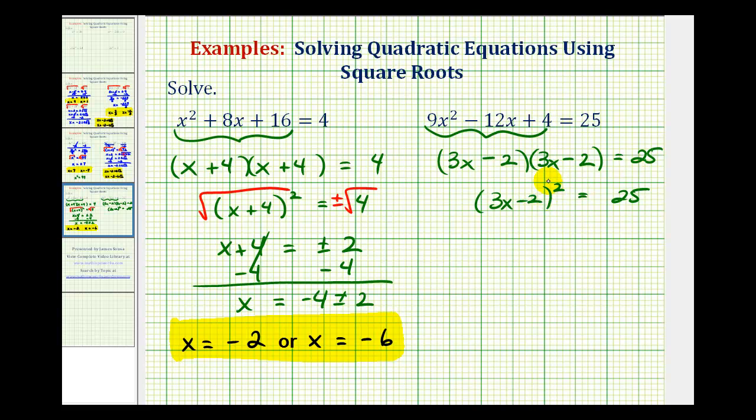And now to undo the squaring, we'll square root both sides of the equation. We'll have a plus or minus here. This simplifies to one factor of 3x minus 2. And then we have plus or minus the square root of 25, which is equal to 5.